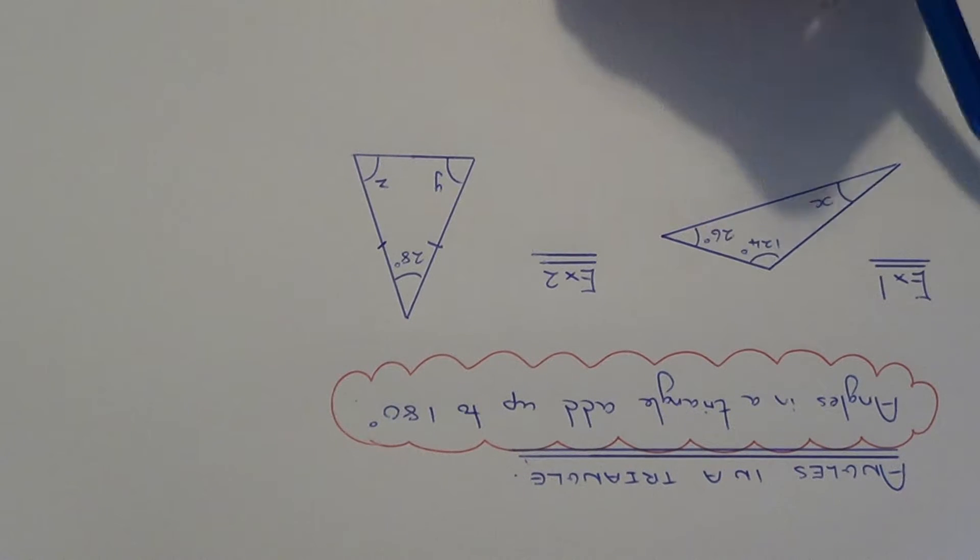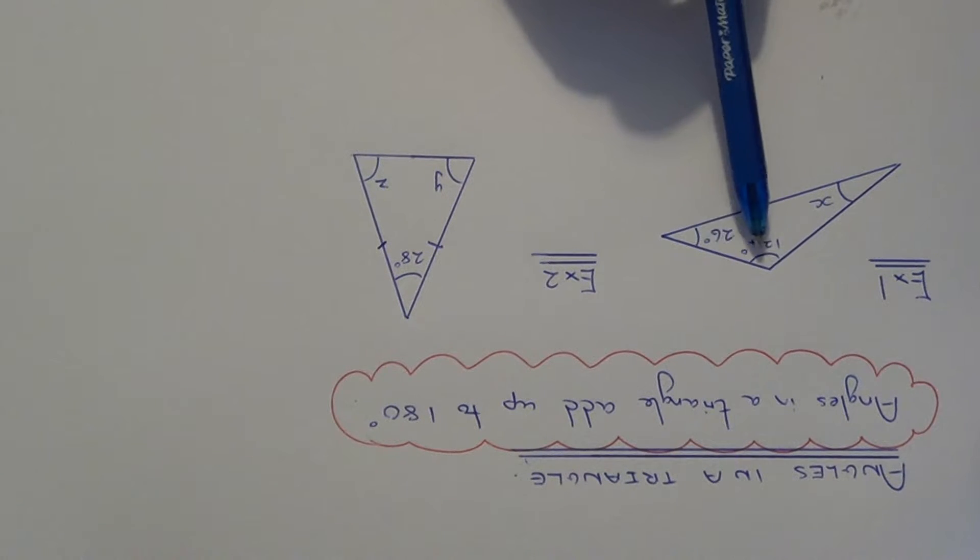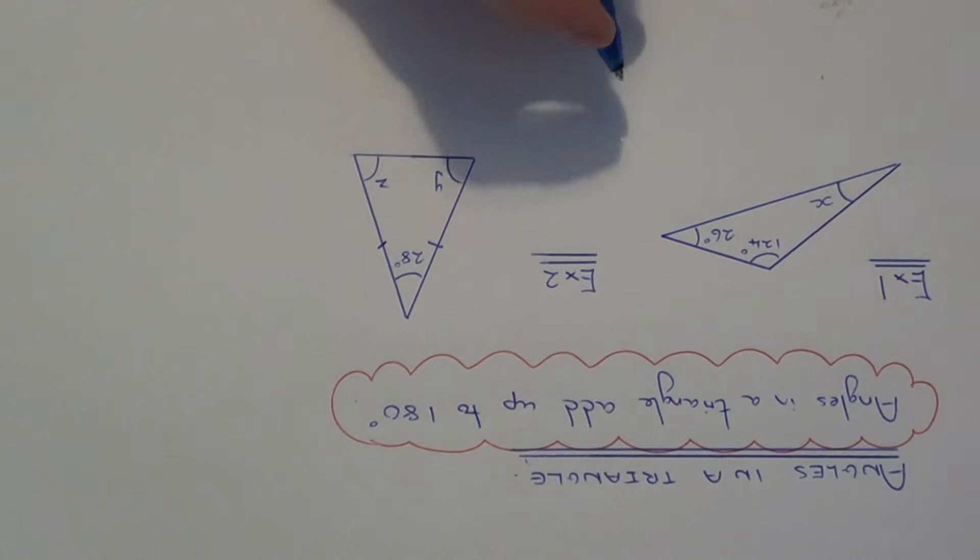Let's have a look at example 1. We need to work out the size of angle X. We've got the other two angles: the top one which is 124 and the other angle which is 26.